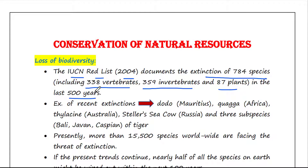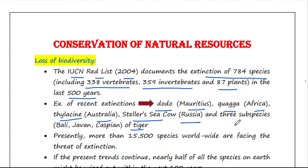Some examples of recent extinctions include the Dodo from Mauritius, Quagga from Africa, Thylacine from Australia, Steller's Sea Cow from Russia, and 3 subspecies of Tiger from Bali, Javan and Caspian.